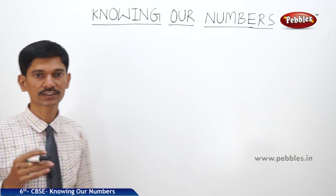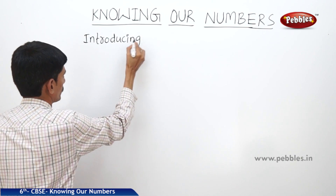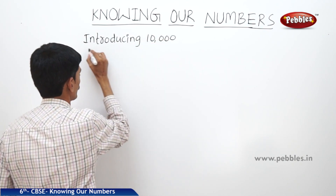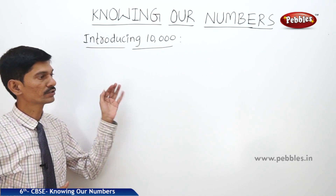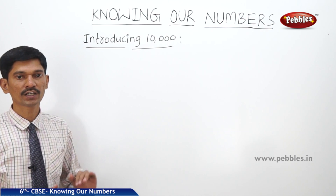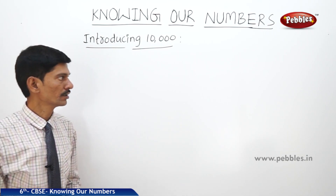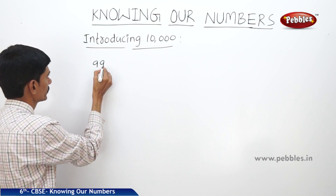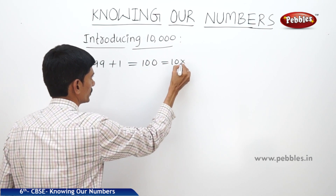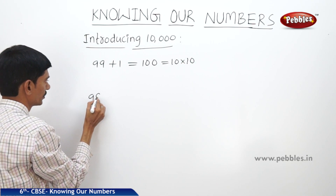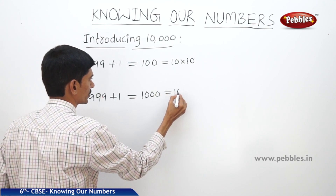Now let us see the next topic: introducing 10,000. As we know, 99 is the largest 2-digit number. Similarly, the largest 3-digit number is 999. If you add 99 + 1, we get 100, which is 10 × 10. And if you add 999 + 1, we get 1000, which can be written as 10 × 100.